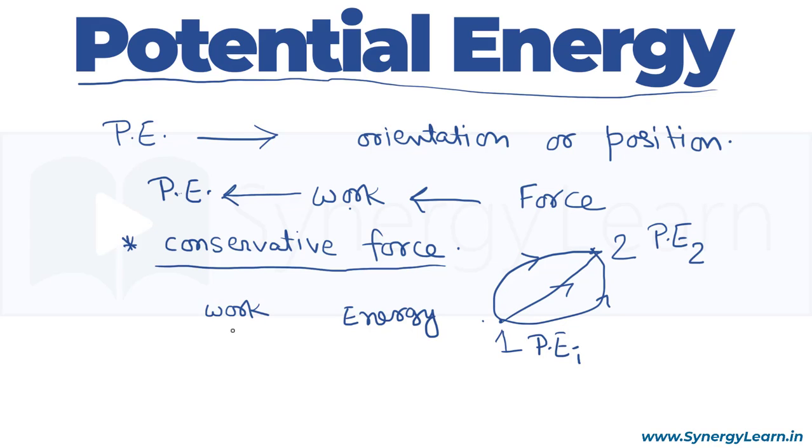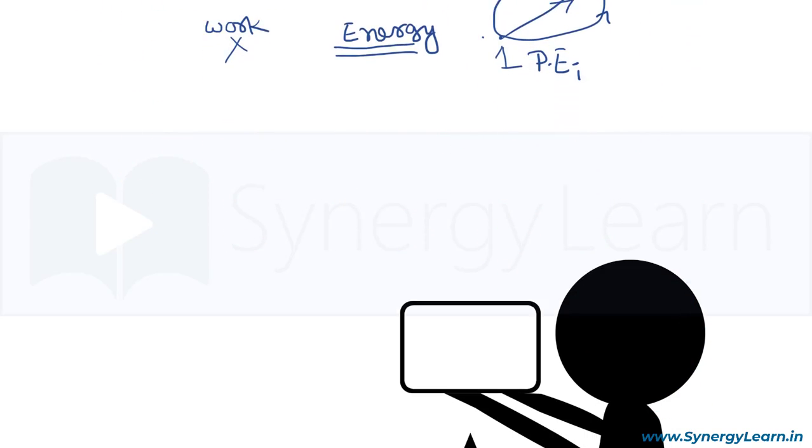By doing so, we will not be involved in calculating work, as we know that even if we calculate the work through any path, we will always get the same value. Since the work done is predictive here from 1 to 2, we are not involving ourselves in calculating work. Instead, we are using potential energy and change in potential energy. Let me explain this using an example.